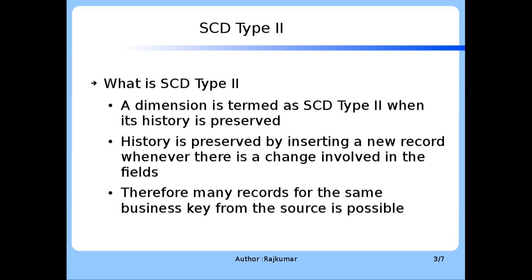What is SCD Type 2? If the history of a slowly changing dimension is captured over time, instead of overwriting the earlier values, then such a dimension is called a Type 2 slowly changing dimension. For more details on what is SCD or slowly changing dimension, refer to my video or course on slowly changing dimension. The Type 2 slowly changing dimension preserves its history by adding a new row to the dimension table whenever there is a change involved in dimensional attributes.